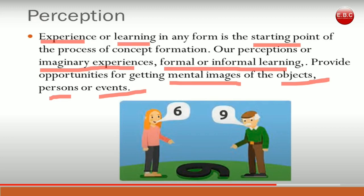Through this image, I want to make you understand that perception can be different for different people. Like, this is number 6 for this girl — this is number 6 — but for this old man it can be 9. So perception can be different for different people depending on how they are perceiving, understanding, or making sense of a particular image, experience, person, or event.